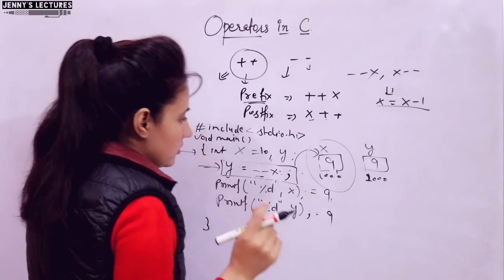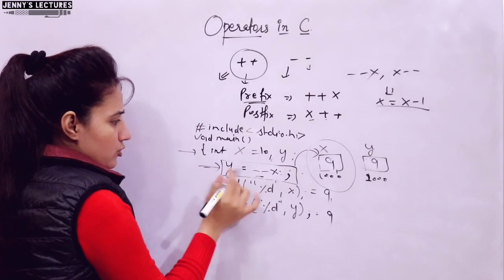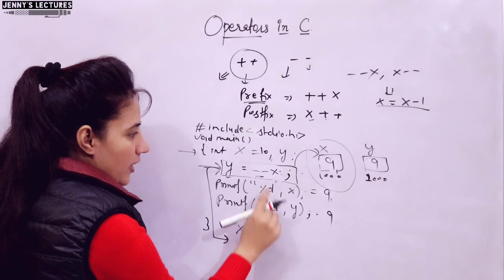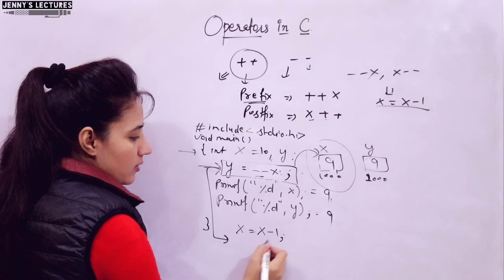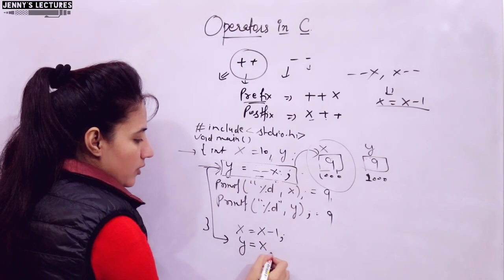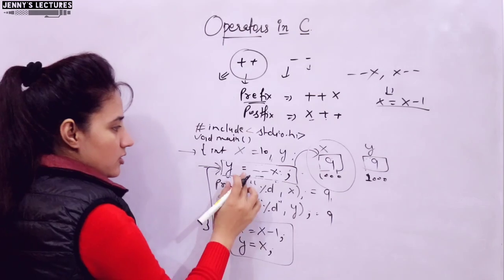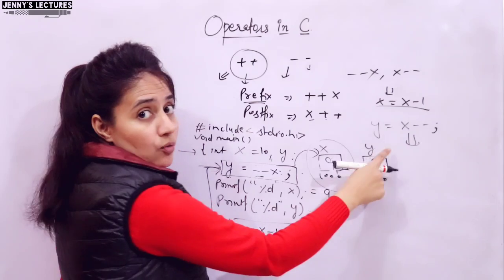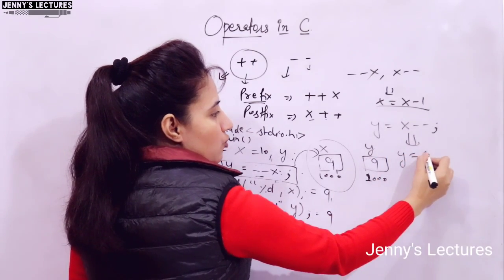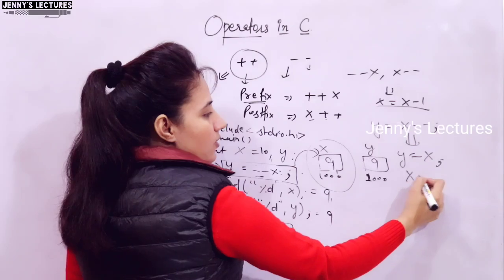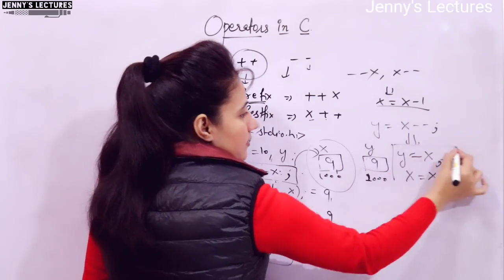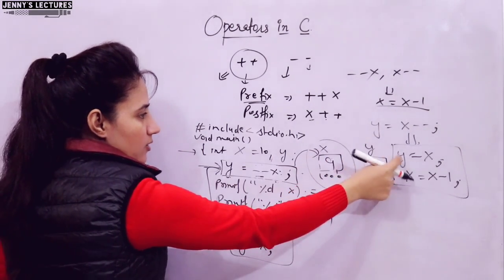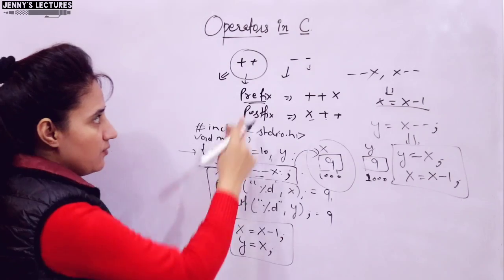We can also rewrite these statements as equivalent two-line forms. For example, y = --x is equivalent to: first x = x - 1, then y = x. And y = x-- is equivalent to: first y = x, then x = x - 1. These two statements are the same as the single-line prefix or postfix notation. The same applies for plus-plus.